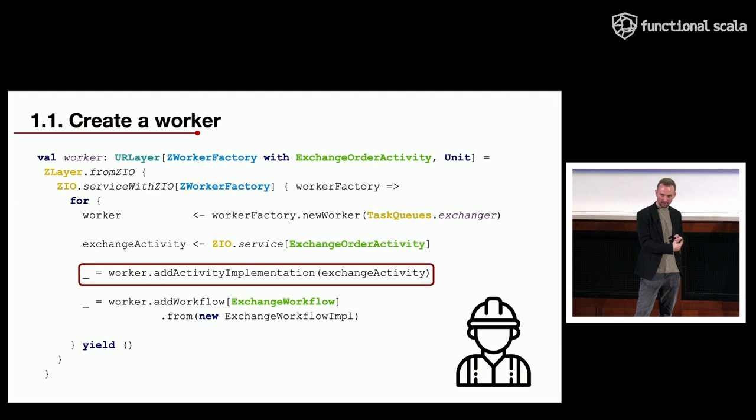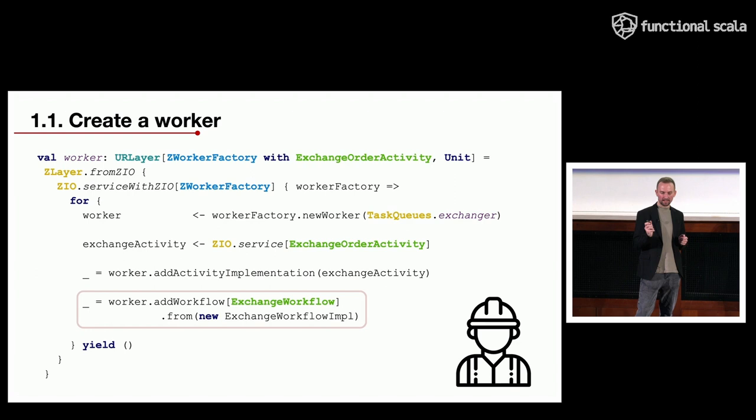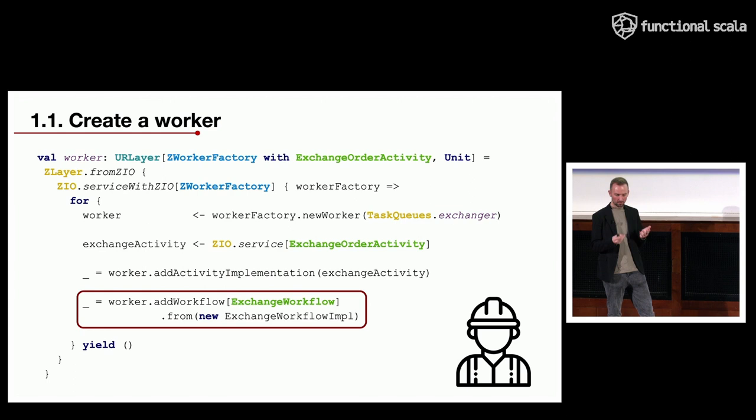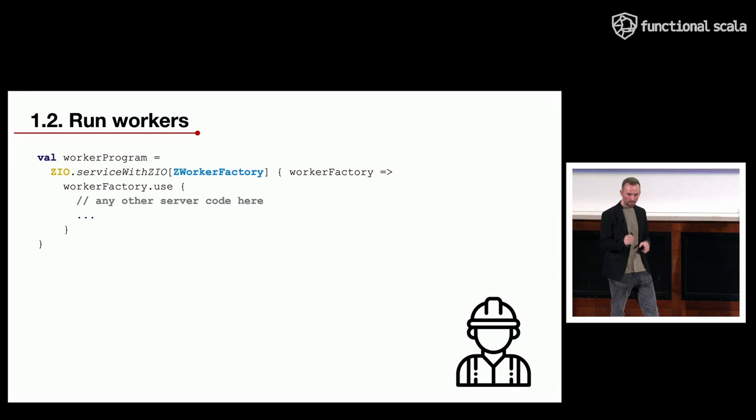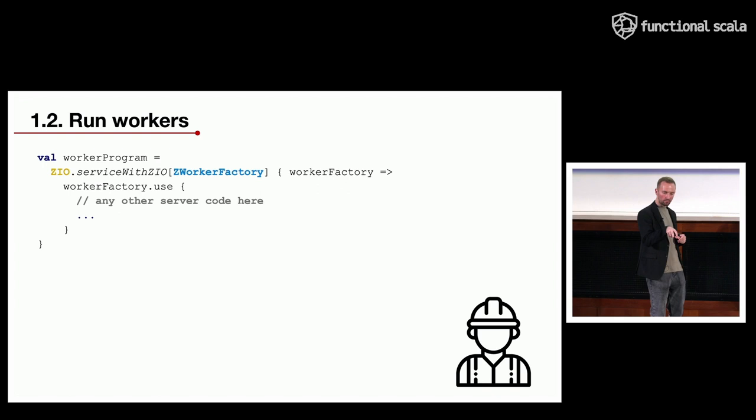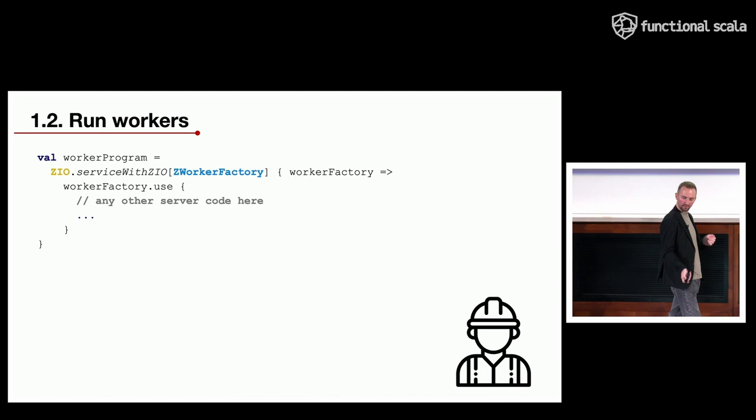You provide workers with the activity implementations which will be used by workflows inside that worker, then you provide the workflow interfaces and implementations. After providing those you start the worker, and it will run and eventually pick up tasks from the task queue. Inside the use method you can also add arbitrary server code for your business logic.